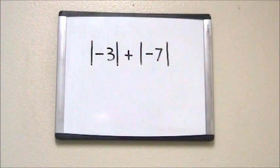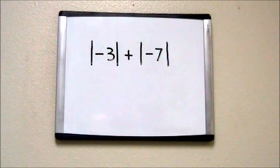In this equation, the absolute value of negative 3 plus the absolute value of negative 7, the plus sign is our operator.